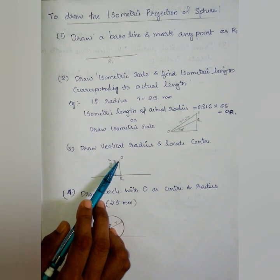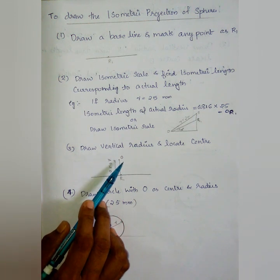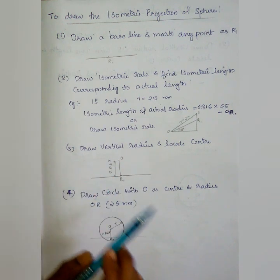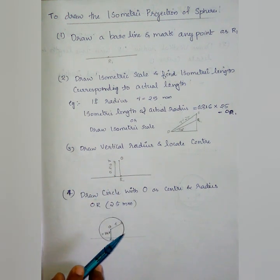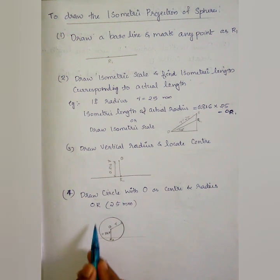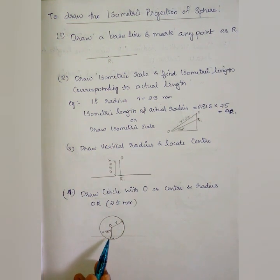Vertically we have a center point, then we draw a circle. We have a center, a radius — it is the actual radius. So we have the figure: isometric projection of the sphere.